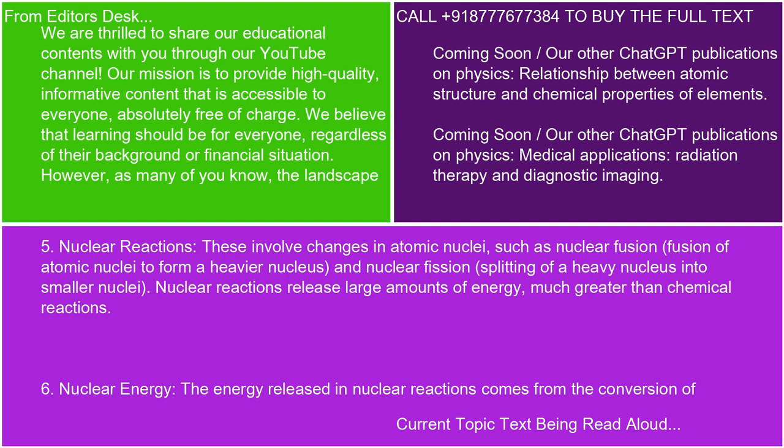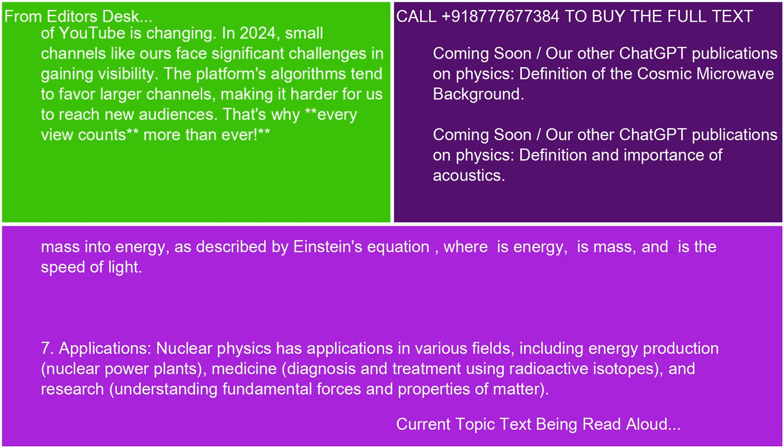6. Nuclear Energy. The energy released in nuclear reactions comes from the conversion of mass into energy, as described by Einstein's equation E=mc², where E is energy, m is mass, and c is the speed of light.